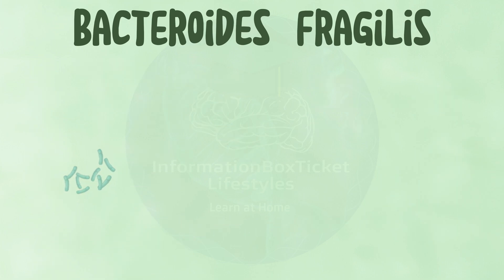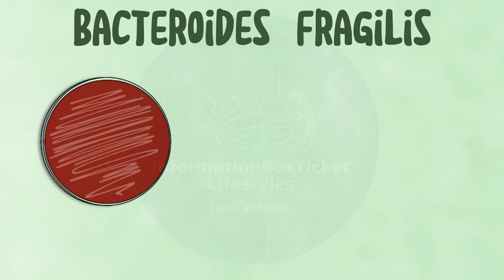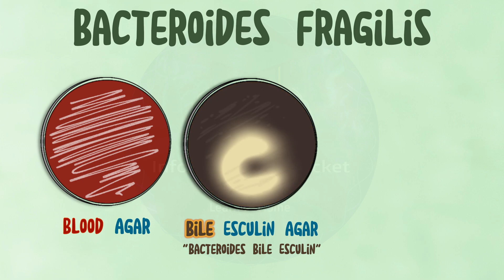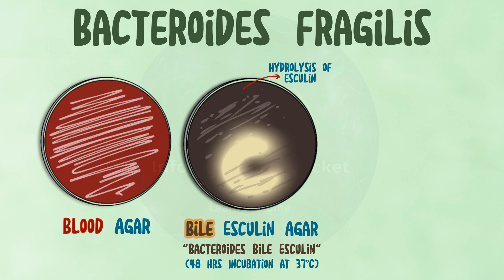As a result, it may grow anaerobically in blood agar, as well as in bile-esculin agar, also known as Bacteroides bile-esculin. Bacteroides fragilis develops dark colonies with brown-black halos after 48 hours of incubation at 35 degrees C, which is caused by esculin hydrolysis.